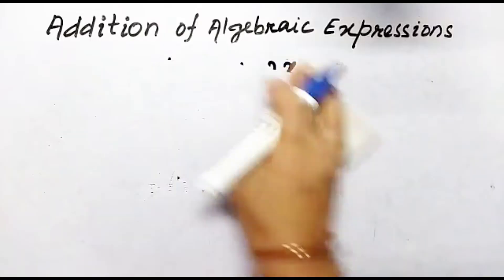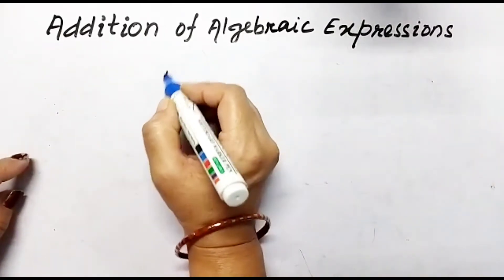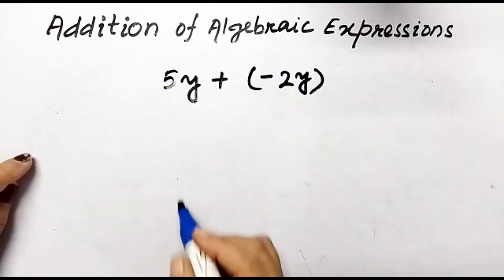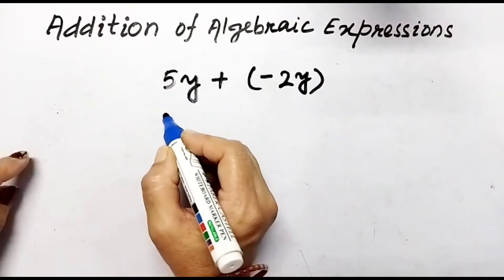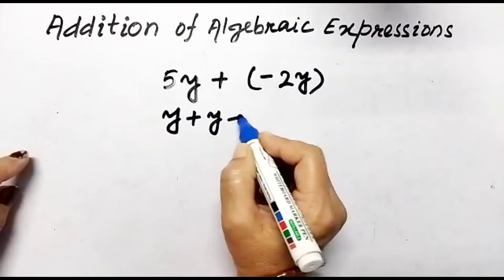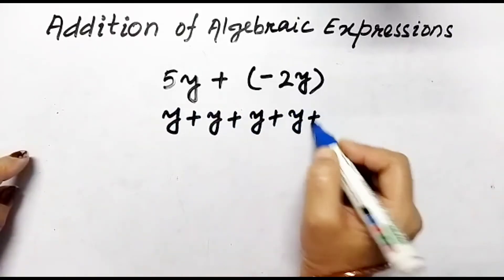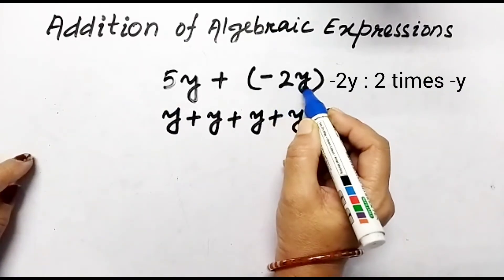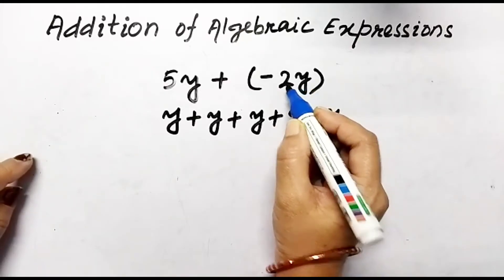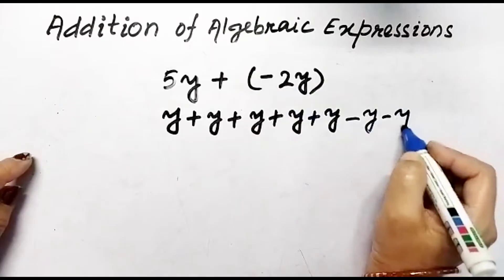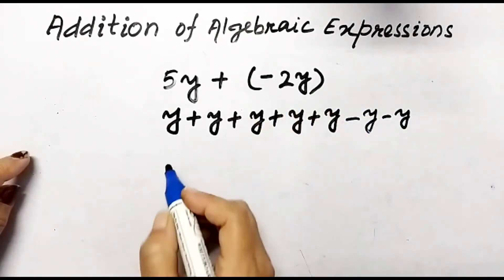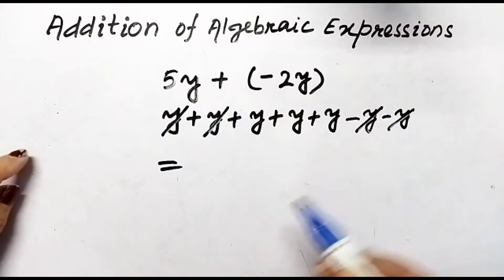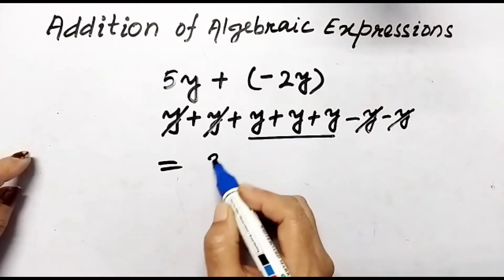Now let us take another example: adding 5y plus negative 2y. What should be the sum? 5y means y added 5 times. Negative 2y means negative y added 2 times. So if we add one positive y and one negative y, then another positive y and another negative y, we can reduce them. What we get at last is 3y.